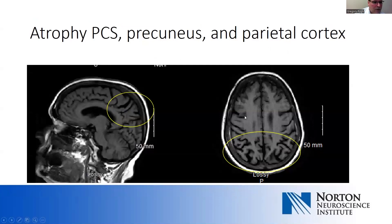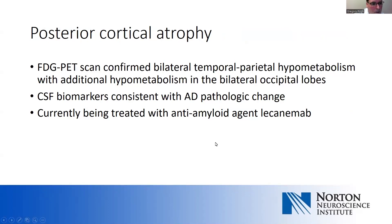Her MRI scan shows the anterior-to-posterior gradient of atrophy we discussed: the anterior structures are reasonably well preserved, but there is fairly profound atrophy of the parietal structures, the posterior cingulate sulcus is very wide open, and there is atrophy of the precuneus — consistent with posterior cortical atrophy. She underwent an FDG PET scan, which showed bilateral temporal parietal hypometabolism with additional hypometabolism in the occipital lobes, and ultimately underwent CSF biomarker testing consistent with Alzheimer's disease pathology. She is now on anti-amyloid therapy with lecanemab.